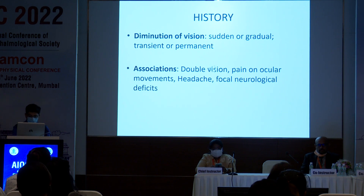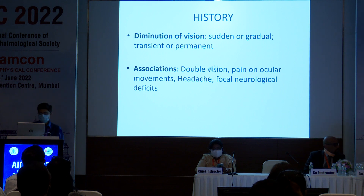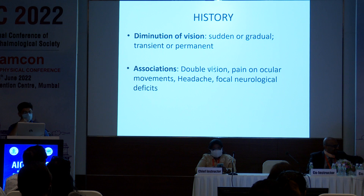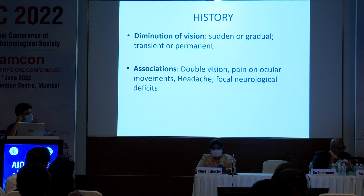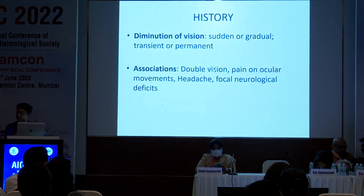Start by taking a history of diminution of vision. Was it sudden or gradual? Was it transient or is it permanent? Are there any associations such as double vision, pain on ocular movements, headaches, or any other focal neurological deficits?